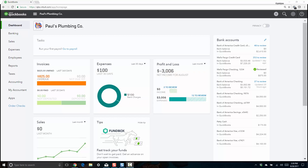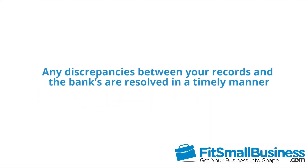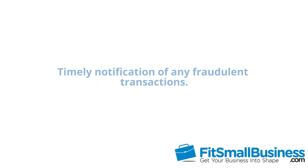Similar to your personal bank accounts, it is important that you reconcile your business bank accounts on a monthly basis. Reconciling is the process of matching the transactions on your bank statement to what you've recorded in QuickBooks. Reconciling your bank accounts regularly will help to ensure any discrepancies between your records and the bank's are resolved in a timely manner, including timely notification of any fraudulent transactions. For example, if you notice transactions listed on your bank statement that you did not authorize, you can notify the bank as soon as possible so that they can investigate.